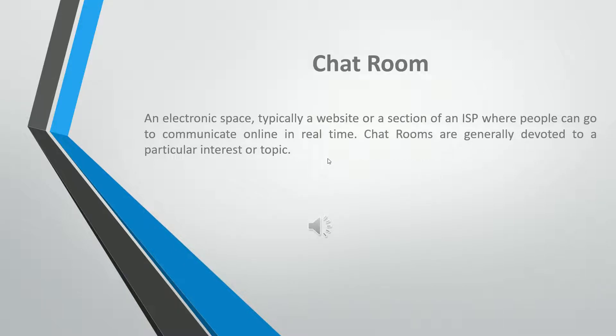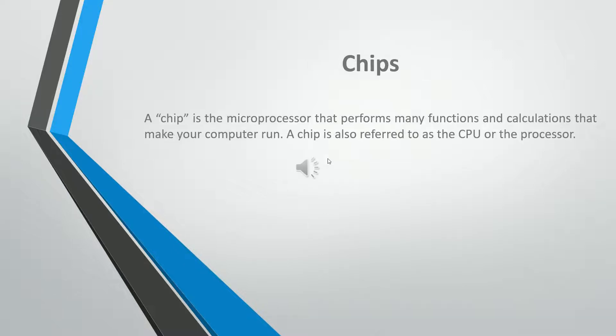A chat room is an electronic space, typically a website or a section of an ISP, where people can go to communicate online in real time. Chat rooms are generally devoted to a particular interest or topic. The chip is the microprocessor that performs many functions and calculations that make your computer run. A chip is also referred to as the CPU or the processor.